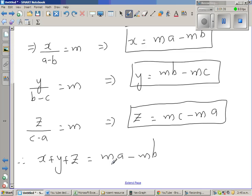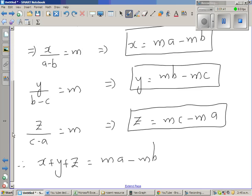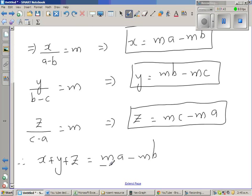Now how did I write that? x is m a minus m b. This is x plus what is y? y is m b minus m c. This is your y, this is your x, this is your y, and your z is m c minus m a. This is your z.